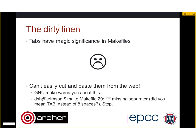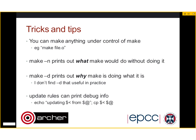Tricks and tips: you can make anything under control of Make, e.g. make file.o. Make -n prints out what make would do without doing it. Make -d prints out why make is doing what it is — though I don't find it that useful in practice because it's very verbose. You can also put echo statements in your update rules to print debug info — for example, echoing 'updating child from self' to show what's happening. These are all useful for trying to understand what other people's Makefiles are doing.